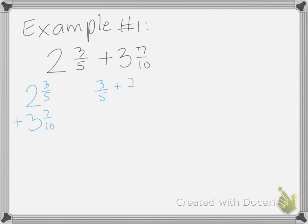3/5 plus 7/10. I found the multiple of 5. It's going to be 10. There's a match. This is going to be times 2. This is going to be times 1. 2 times 3 is 6/10 plus 1 times 7/10.